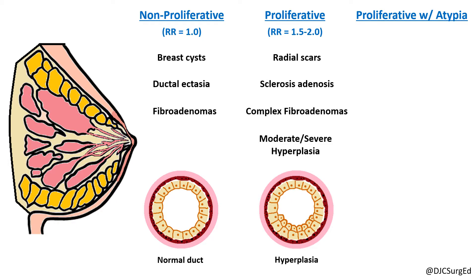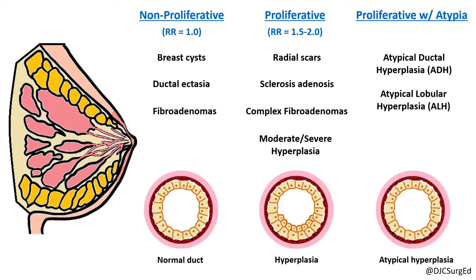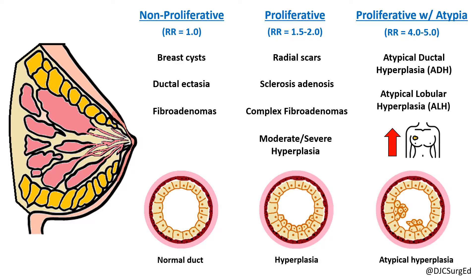Proliferative lesions with atypia include atypical ductal and atypical lobular hyperplasias and carry a relative risk of 4 to 5. These lesions, like LCIS, are not precursor lesions but instead are considered to be markers for increased risk of breast cancer, as subsequent breast cancer may develop in either breast and not necessarily in the area of atypia.